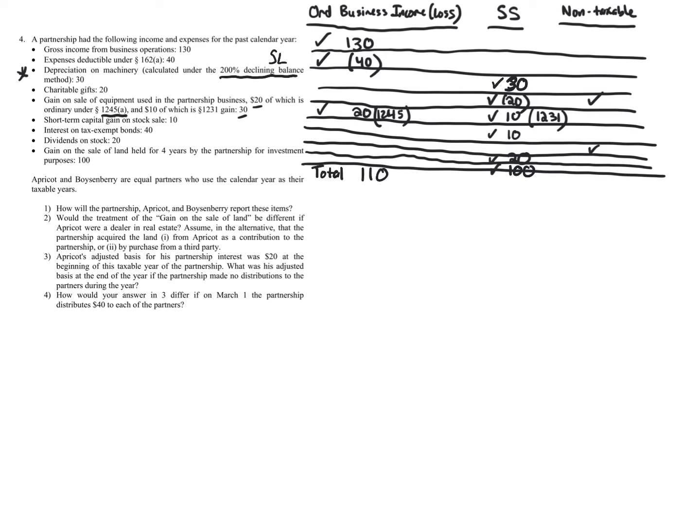Now looking at the partners: each partner gets a Schedule K-1 showing their distributive share of items. Partnerships are not subject to double taxation — they're subject to single-level, flow-through taxation, meaning the owners pay the tax on allocated items. The general rule is to allocate using the partnership agreement, subject to substantial economic effect limitations.